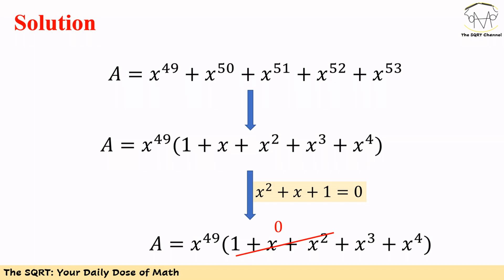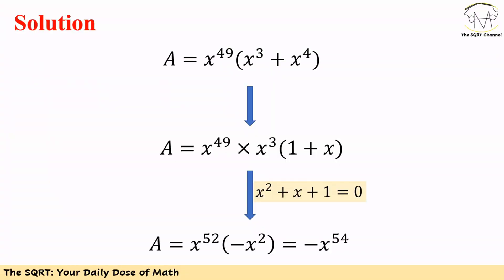The expression simplifies to x^49 times (x³ + x^4). Now we apply the same approach: we factor out x³, giving us x^49 × x³ × (1 + x). Remember, x² + x + 1 = 0, so 1 + x = -x². Using this identity, we get x^52 × (-x²), which equals -x^54.